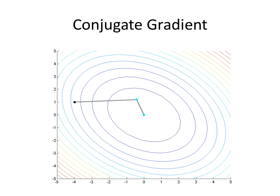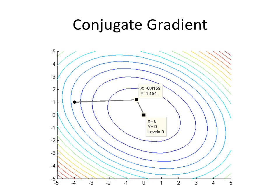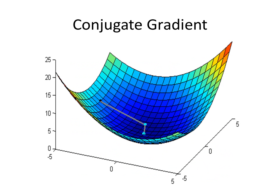We now see the conjugate gradient method in action on our original problem. In the first iteration, the algorithm takes a step size of 1.4 along the gradient to reach the point negative 0.41, 1.19. In the second iteration, the algorithm takes a step size of 1.7 along the gradient to reach the optimal solution within 10 to the negative 16th. This concludes the video lecture on the conjugate gradient method.